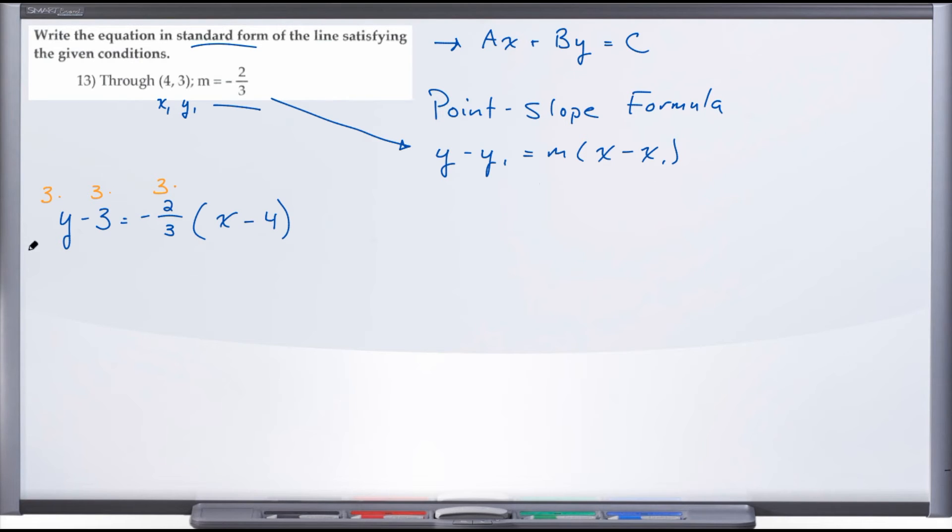When we do that, we're going to have now 3 times y, which gives us 3y, minus 3 times 3, which is minus 9, equals—and the whole reason we did this was to cancel this fraction out because this 3 and this 3 cancel and we're simply left with a negative 2—and then that quantity (x - 4). So now you can see we have an equation that doesn't have any fractions, which I prefer to work with. But these two equations are saying the exact same thing; just one has a fraction and one does not, but these are equivalent equations.